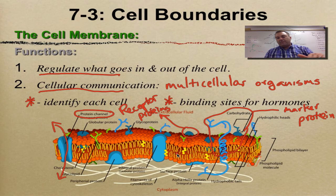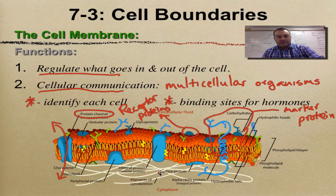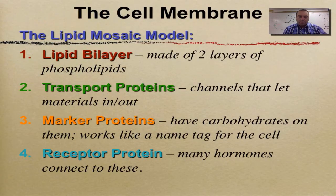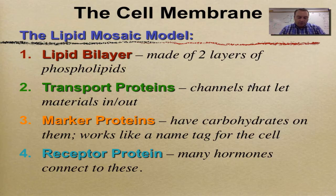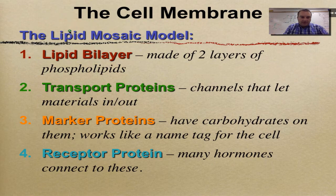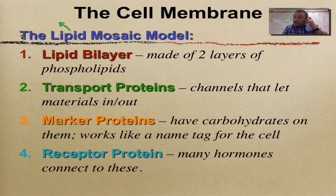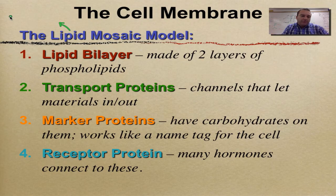We're going to go over this stuff again later in this screencast, so if you don't get it right now that's fine. Let's move on. When we talk about the cell membrane and its structure, we're going to cover what is called the lipid mosaic model. Lipid refers to fats, oils, and waxes — specifically we're talking about phospholipids.